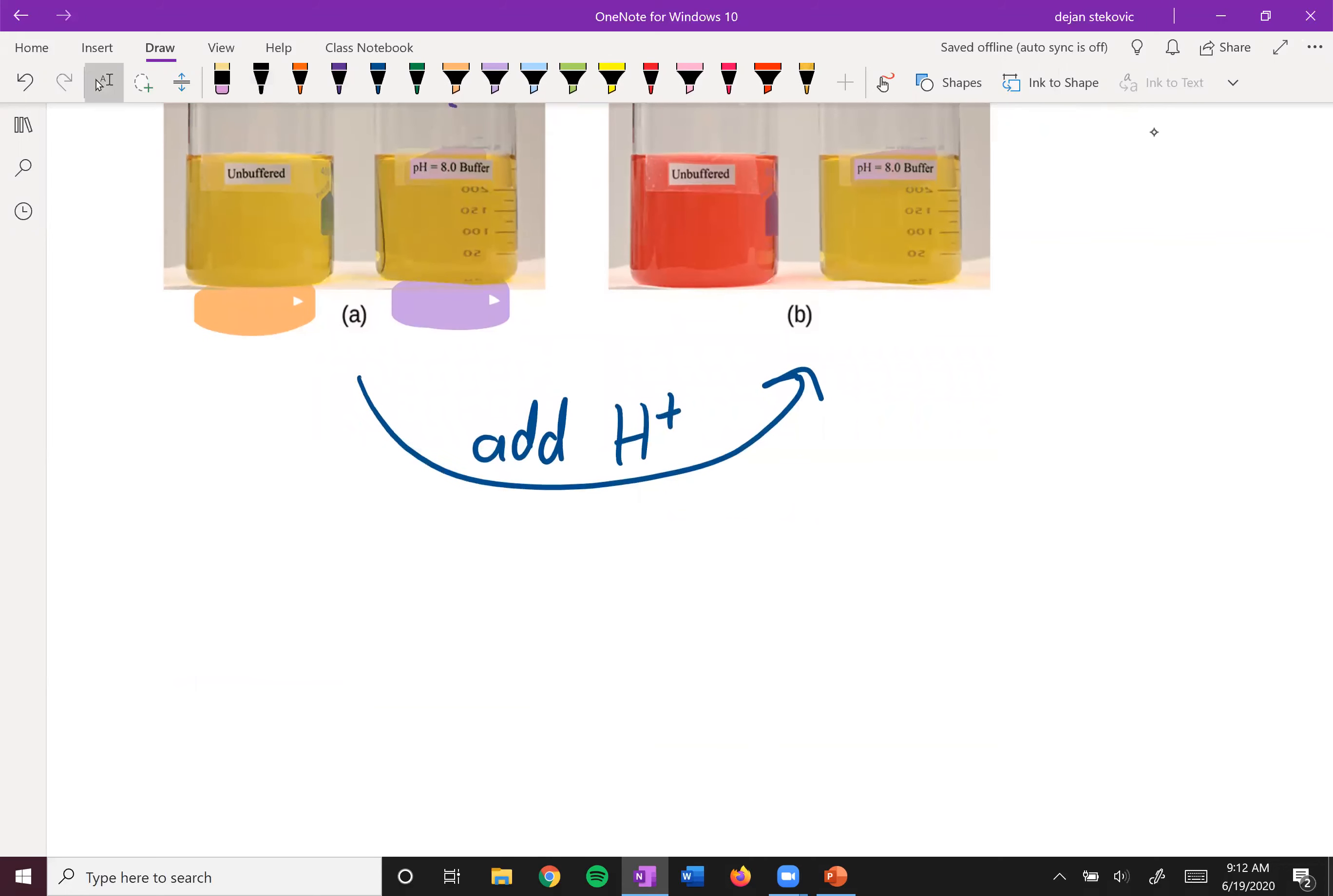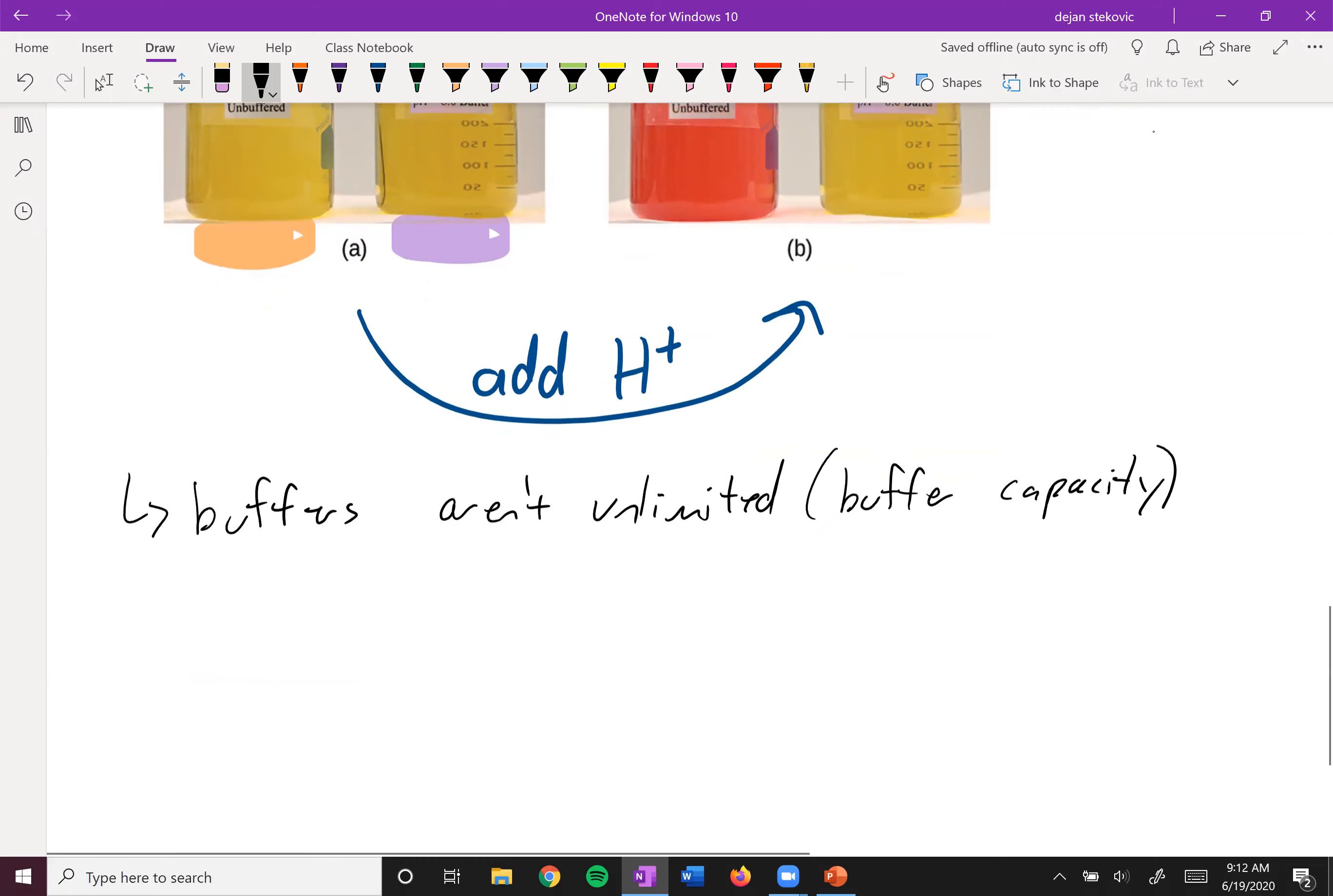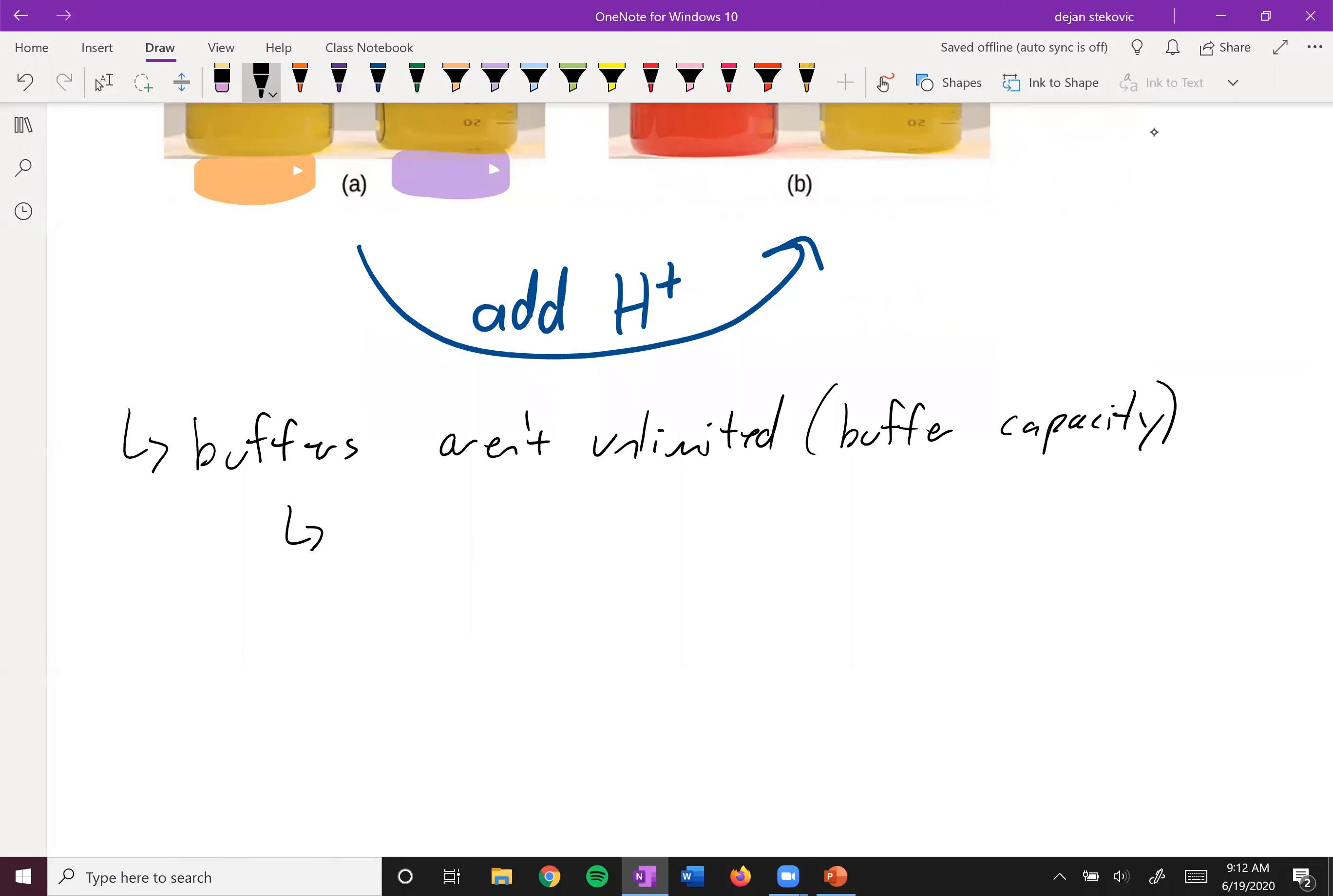So buffers aren't unlimited, and so this is known as the buffer capacity. If you add too much acid or base, basically the buffer can't buffer that much and then you will have a drastic change in the pH. So the rule of thumb is that the conjugate acid-base concentrations need to be within 10% of one another to be effective.